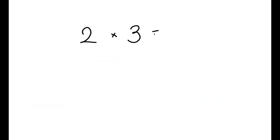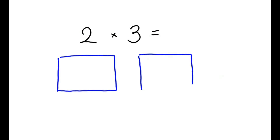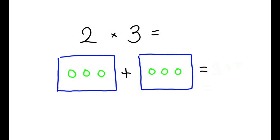2 times 3 means there are 2 boxes, and each box has 3 circles, and the answer is the total number of circles, which is 3 plus 3.